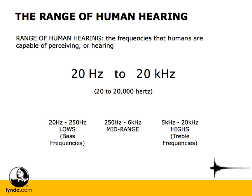A little side note on the range of human hearing: most of us don't hear that much above 16 kilohertz, even though the range goes up to 20k. And actually, as we get older, we hear even less than that, which is why kids can set their cell phones to ring with these really high-pitched ringtones. And when they go off in class, the teachers can't hear it, because their hearing's not as good as it used to be. And everybody says kids are stupid.